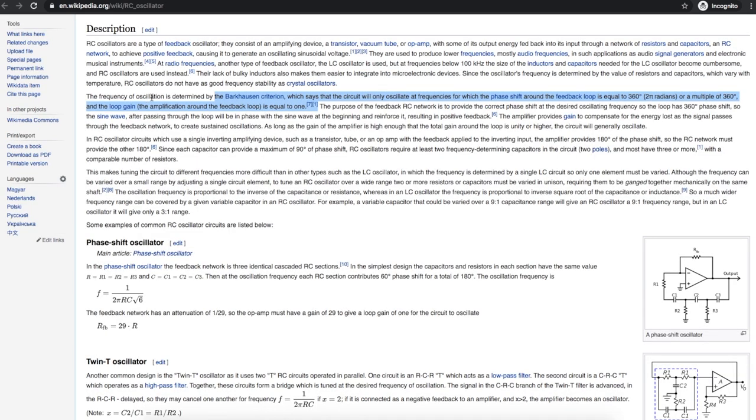In order for an amplifier to oscillate, according to the Barkhausen criterion, we need two things. We need the phase shift around the feedback loop to be a multiple of 360 degrees, which could be zero as well. And we need the loop gain, the amplification around the feedback loop, to be one.